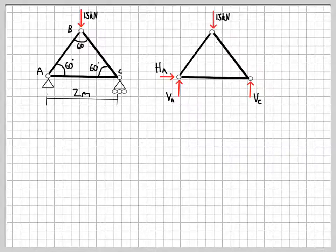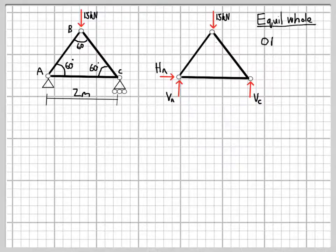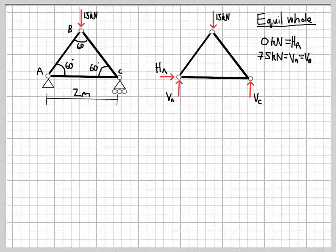As before, we look at equilibrium of the whole truss. We can start by resolving forces horizontally, and because there are no horizontal forces acting other than the possible support reaction, we very quickly get that support reaction is equal to zero.